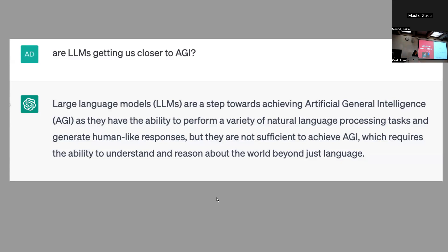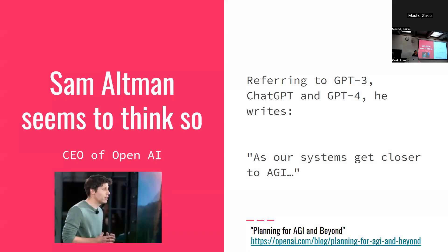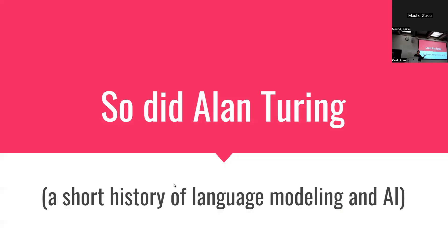Sam Altman, CEO of OpenAI, does seem to think that LLMs are getting us closer to AGI, and this is an explicit goal of OpenAI. In a recent blog post referring to the GPT series, he indicates the LLMs are moving in the direction of AGI. This is a debatable topic — some say you can't get there from LLMs — but Alan Turing also thought that language modeling would get us to intelligence. So here's where I want to launch into a short history of language modeling and AI.